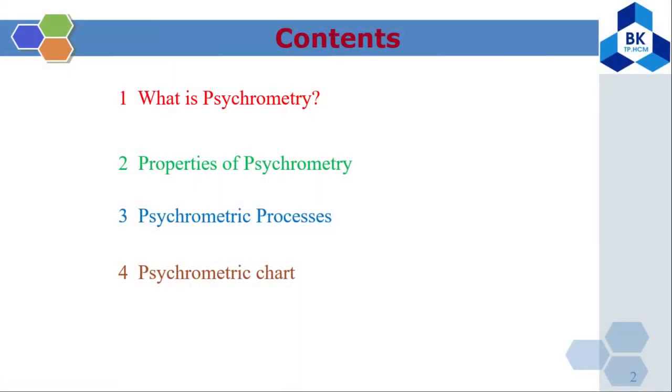Hi class. Now we will go to the brief introduction of Chapter 5: Psychrometry. In this chapter we cover four main points. First, what is psychrometry? Second, the properties of psychrometry. Number three, psychrometric processes. And number four, the psychrometric chart.